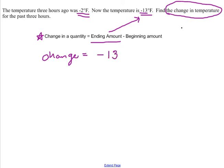And then what are we going to be doing? We're going to subtract. I want to be sure that I subtract - there's the subtraction. And I want to subtract the beginning amount. The beginning amount, they told us 3 hours ago, was negative 2. So we're going to subtract negative 2 as the beginning amount.